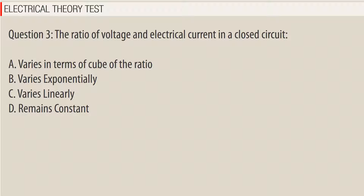Question 3: The ratio of voltage and electrical current in a closed circuit — a) varies in terms of cube of the ratio, b) varies exponentially, c) varies linearly, d) remains constant. Answer: D.